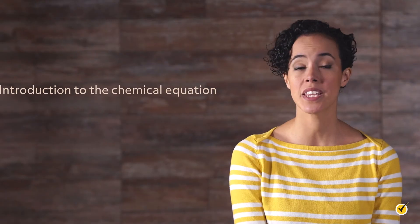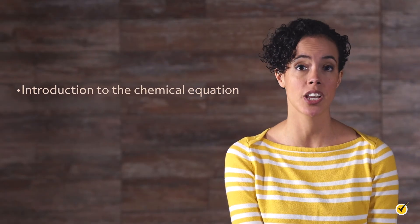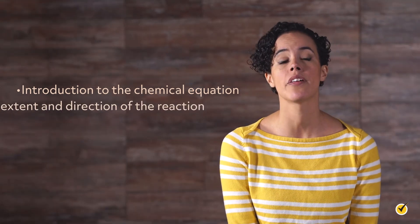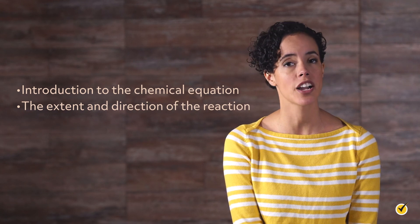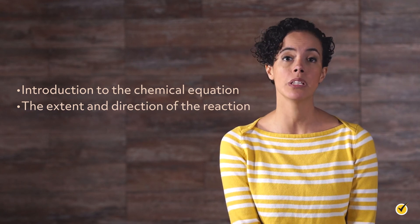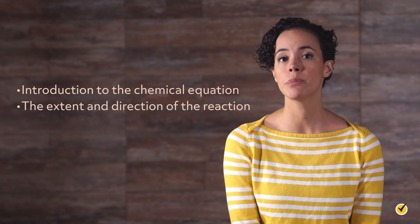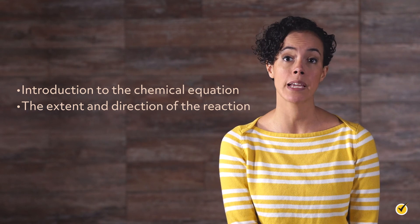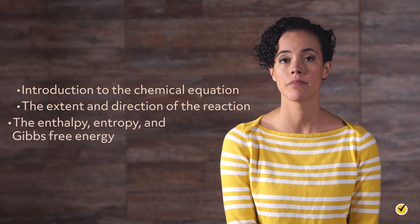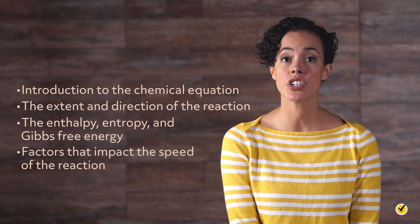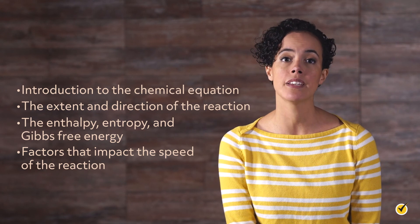With that, let's wrap up with a review of what we've covered today. We began with an introduction to the standard notation used to describe a reaction — the chemical equation. We then segued into a discussion on the extent and direction of the reaction, noting that most reactions reach equilibrium with constant concentrations of both reactants and products. The equilibrium is determined by the thermodynamic quantities of the reaction: the enthalpy, entropy, and Gibbs free energy. And lastly, we considered what factors impact the speed of the reaction, and how we can alter them. Thanks for watching, and happy studying!